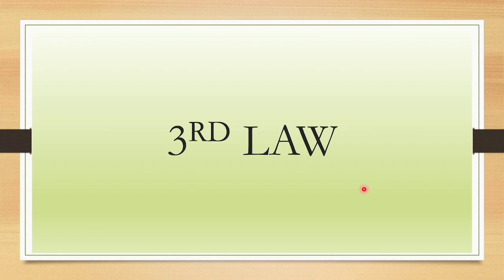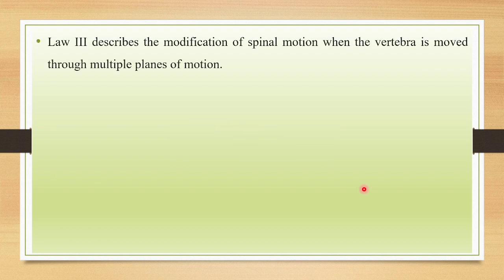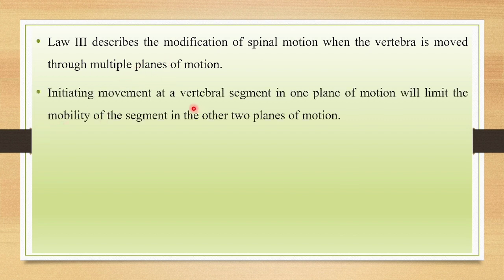Coming to the Third Law, put forward by Nelson in 1948 — about 30 years after the formulation of the First and Second Laws by Harrison Fryette. The Third Law describes the modification of spinal motions when a vertebra is moved through multiple planes of motion. Initiating movement at a vertebral segment in one plane of motion will limit the mobility of that segment in the other two planes of motion.